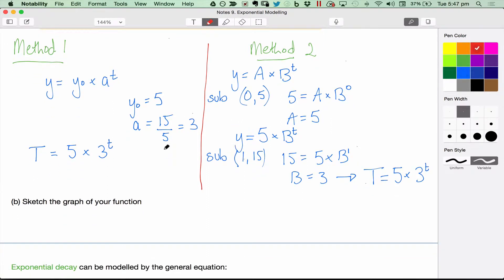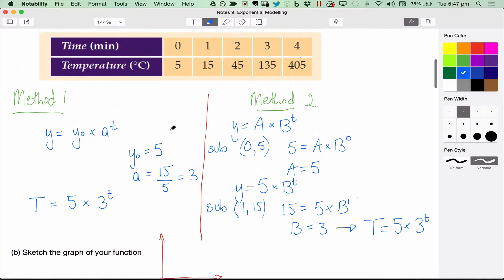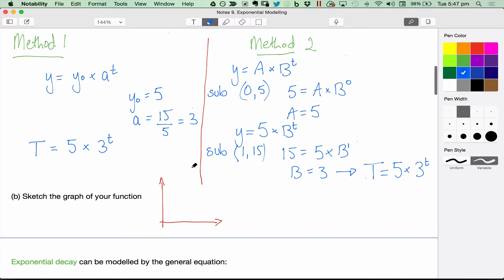Part b here, sketch the graph of your function. Probably one of the most important things here is the labelling of the axes. You're always going to have it in the top first quadrant here, so you don't need to bother drawing the other quadrants. It's growing exponentially, starting at 5 and going up, so you need to label this one, this point. There's no t-axis intercept down here, so we don't need to label anything. You do need to label the axes, though.